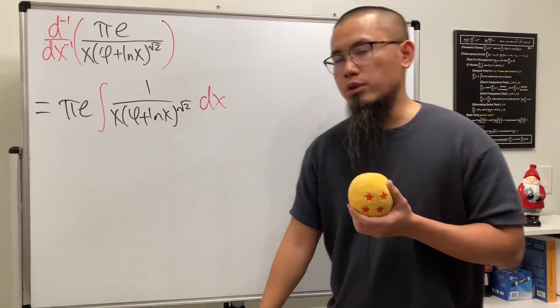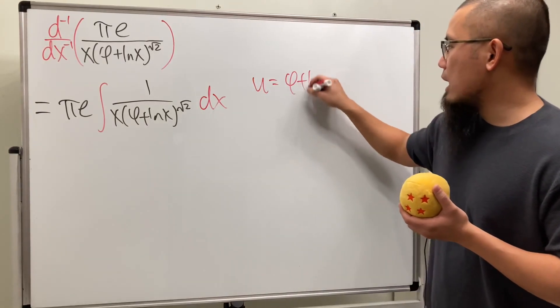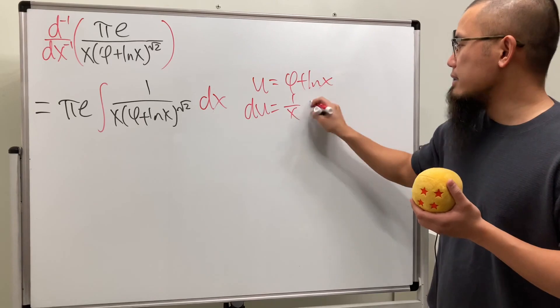And for this right here, we can just do a nice u sub. Let u equal to the inside. We have phi plus ln x, and we can see that du is just going to be 1 over x dx.